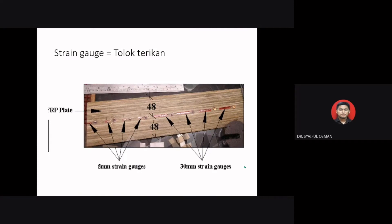Here is an example of an application of a strain gauge during bending testing. We stick the strain gauge on the specimen to determine the change in length of the sample. In Malay, a strain gauge is called 'tolok terikan'.